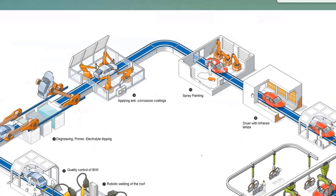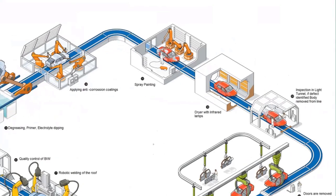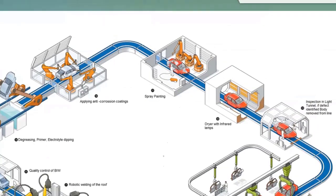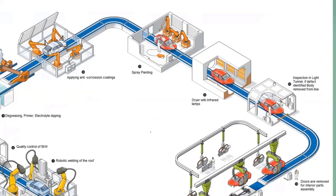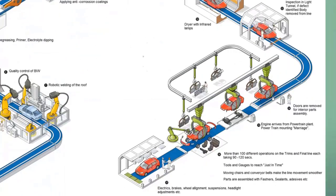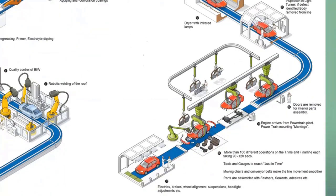The car is dried and comes out of the paint shop. In the next light tunnel, paint quality is checked; if there are issues, the car is removed from the line and reworked. At this stage the painted car body is ready and moves towards the trims and chassis line. The first activity in the trims and chassis line is to remove the doors for easy access.